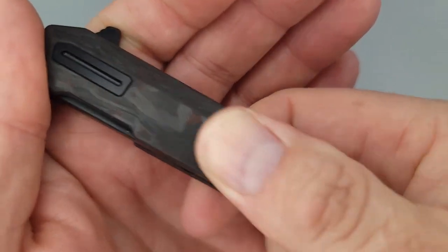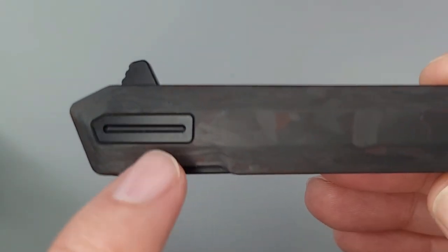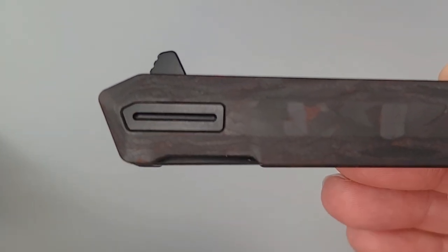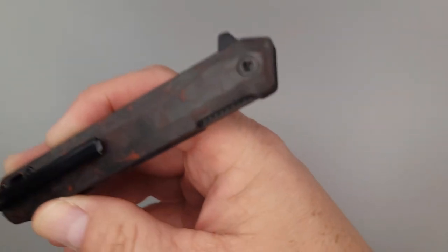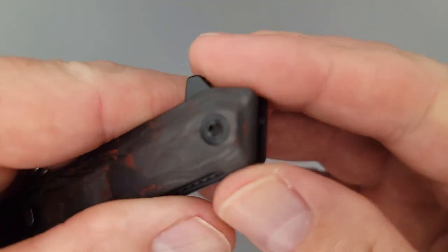Now check this out, something that you don't normally see. Look at this pivot. I don't know that I've seen a pivot that looks like that and on this side it looks regular and that is a T8.